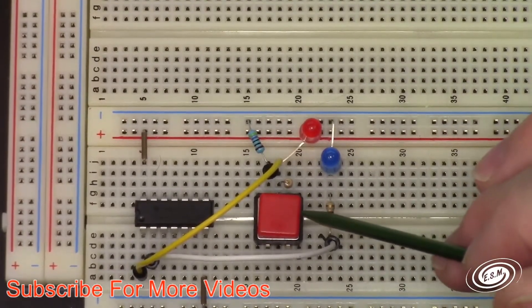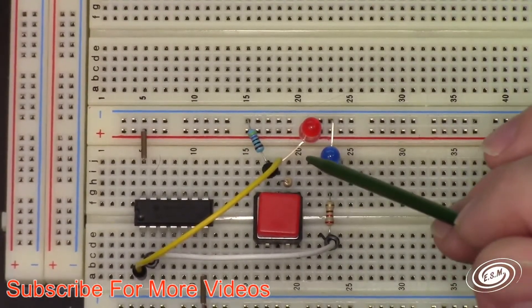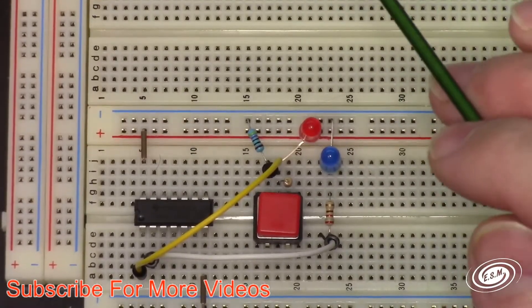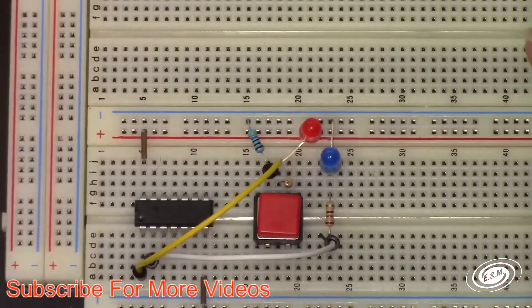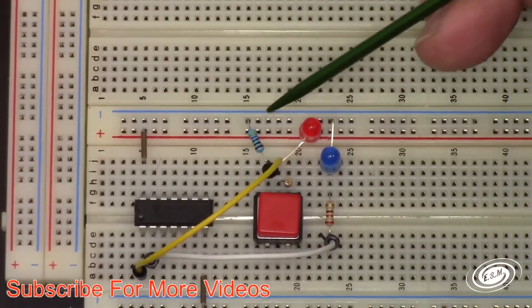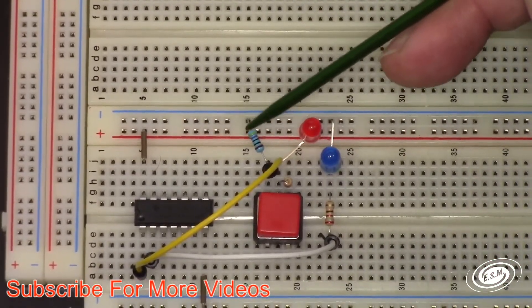Now this is what threw me for a loop, was this button circuit. Because a floating pin in one of these chips is considered a high. So if an input's floating, it's set as a high. So if you want it to be a low and then you apply a high, you have to use a pull-down resistor, and that's what this is right here. I'm using this as a pull-down resistor.